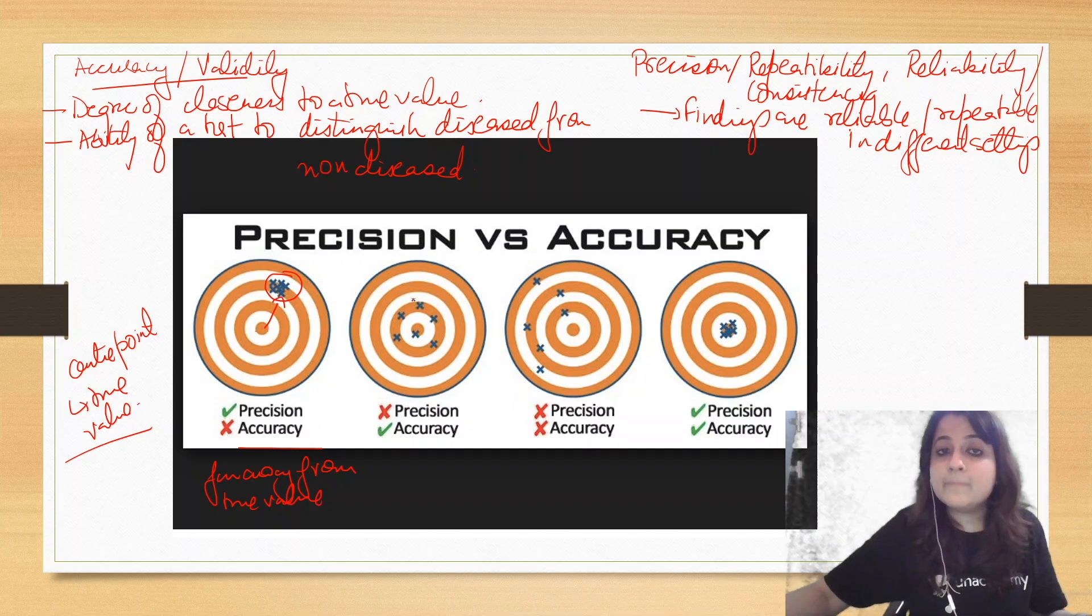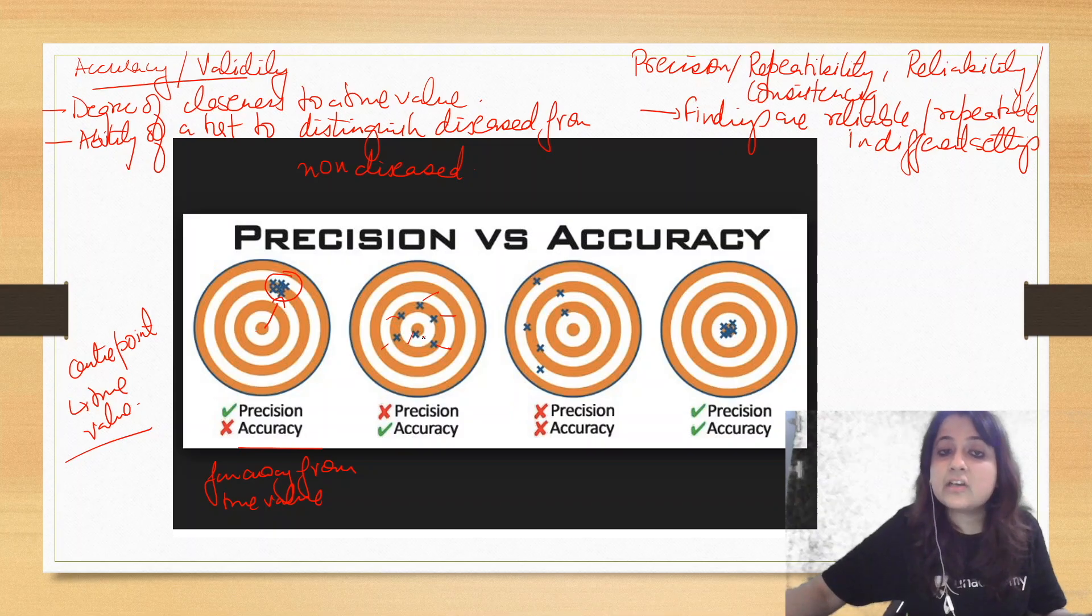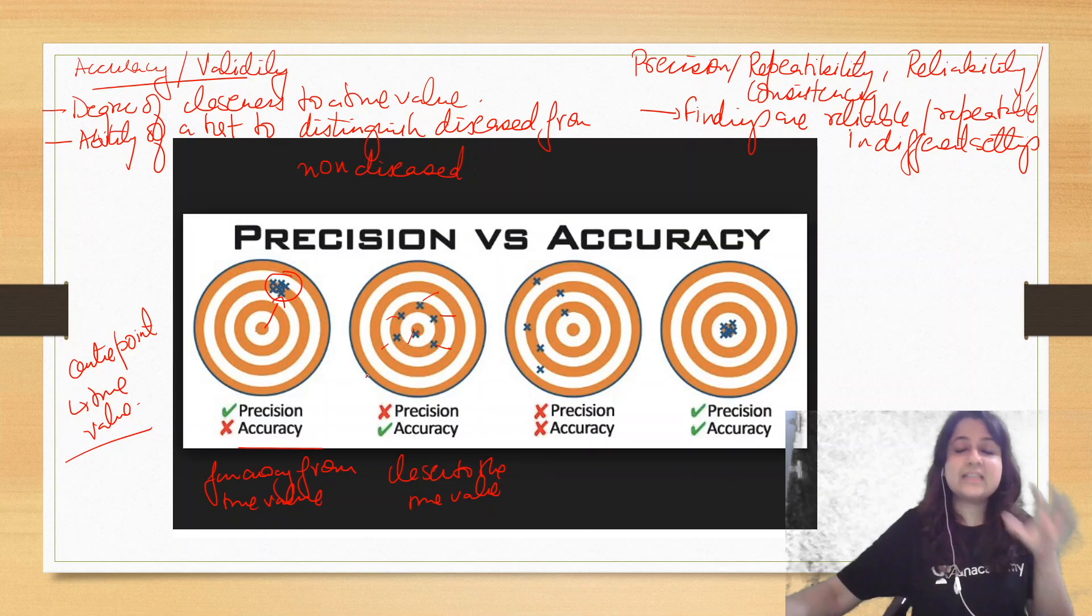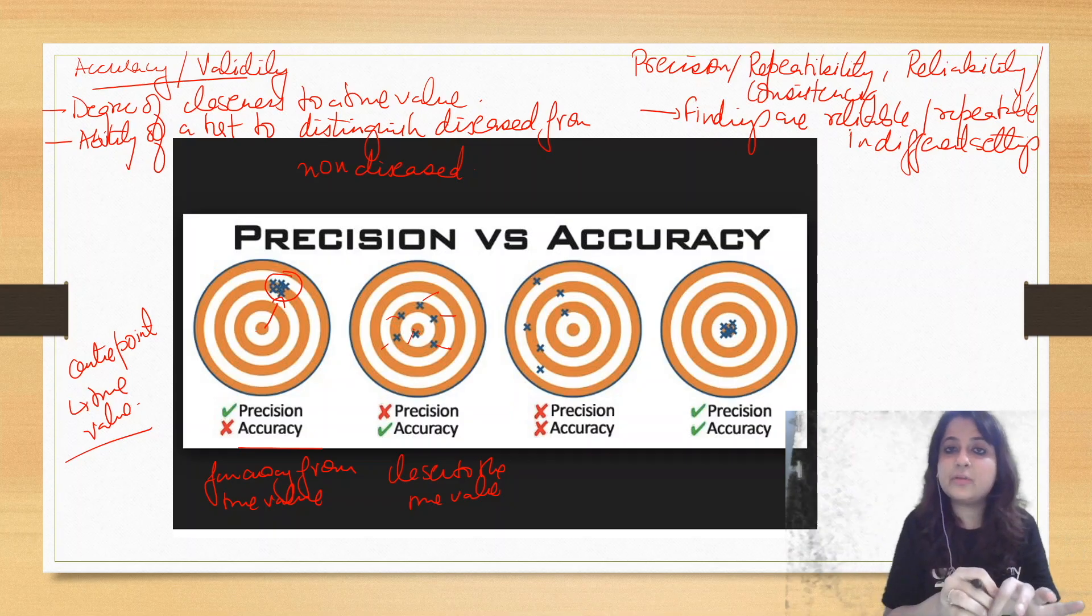Look at image number two. If you see every time my dart is hitting at different points. But it is closer to the true value. It is closer to the true value. Once it has also hit exactly at the true value. So this lacks precision because every time the dart is hitting at different points, but it's closer to the true value. So it has accuracy but lacks precision.